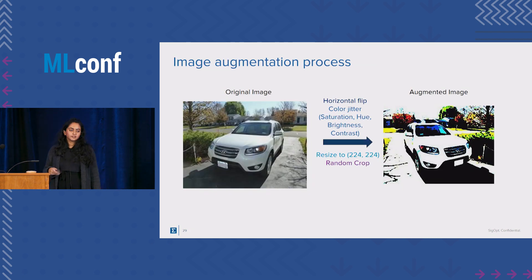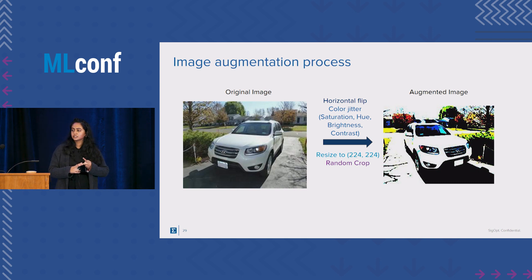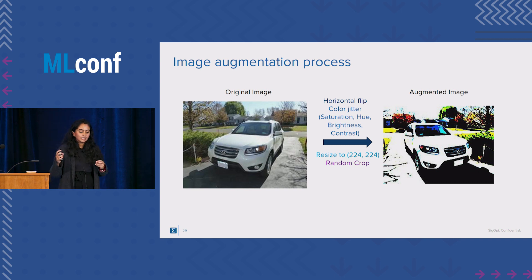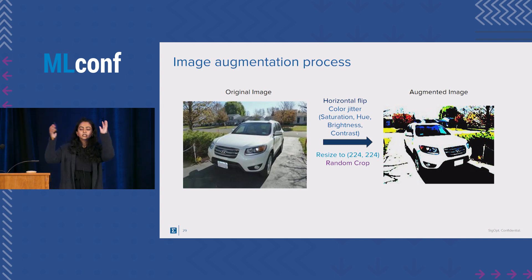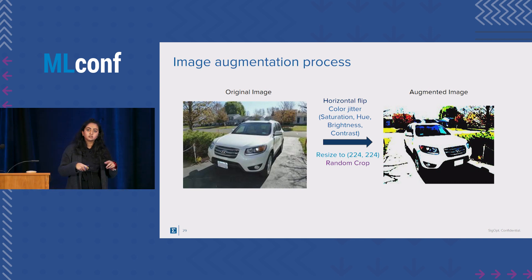The image augmentation process is simple: each original image was augmented only once due to computation costs. It goes through horizontal flip and color jitter — composed of saturation, hue, brightness, and contrast — whose parameters we get from SIGopt. Images are resized to 224×224 and randomly cropped. At the end, we go from 16,000 to 32,000 images, half augmented and half original. For training, we use a mixture of both so the model sees healthy noise, but for validation we use only original images.